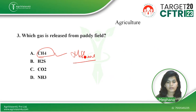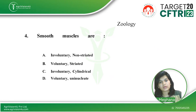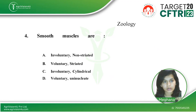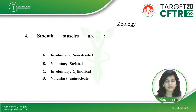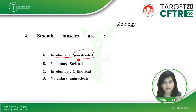The next question is from zoology: smooth muscles are — Option A is involuntary and non-striated, Option B is voluntary and striated, Option C is involuntary and cylindrical, Option D is voluntary and uninucleate. The correct answer is Option A: smooth muscles are involuntary and non-striated.